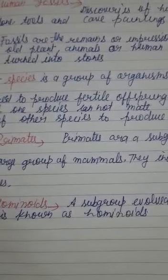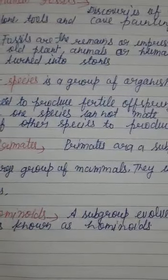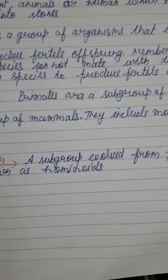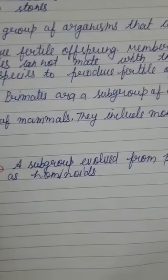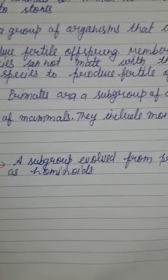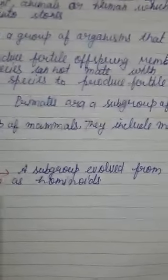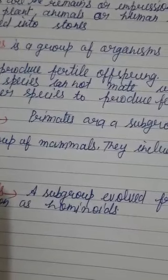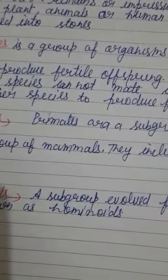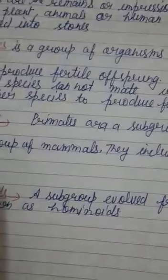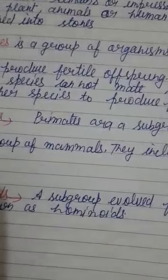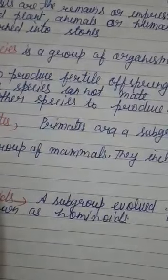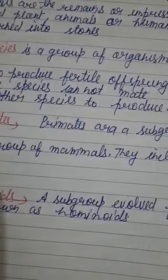Next, primates — ya Hindi mein primates. Primates is a sub-group of a large group of mammals — stanapayi jeevaon ka ek bada group hai, uska ek bhaag. Ismein monkey, apes shamil hain. Is primate upsamooh mein vanar, langur, maanav — yeh sab shamil hote hain. Inke shareer par baal hote hain, inme breeding karne ki capacity hoti hai, aur inke babies female ke uterus mein lambe samay tak palete hain.